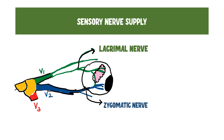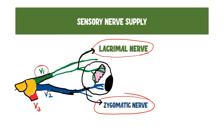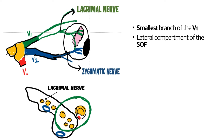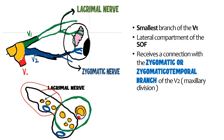To understand the sensory nerve supply, focus on the ophthalmic division, V1. The main nerve supplying sensory innervation to the lacrimal gland is the lacrimal nerve. There is also another nerve drawn in blue, coming from the second division of the trigeminal nerve — the maxillary division — and that nerve is the zygomatic nerve. The lacrimal nerve is the smallest branch of V1, emerging from the lateral compartment of the superior orbital fissure and entering the orbit to finally supply the lacrimal gland.